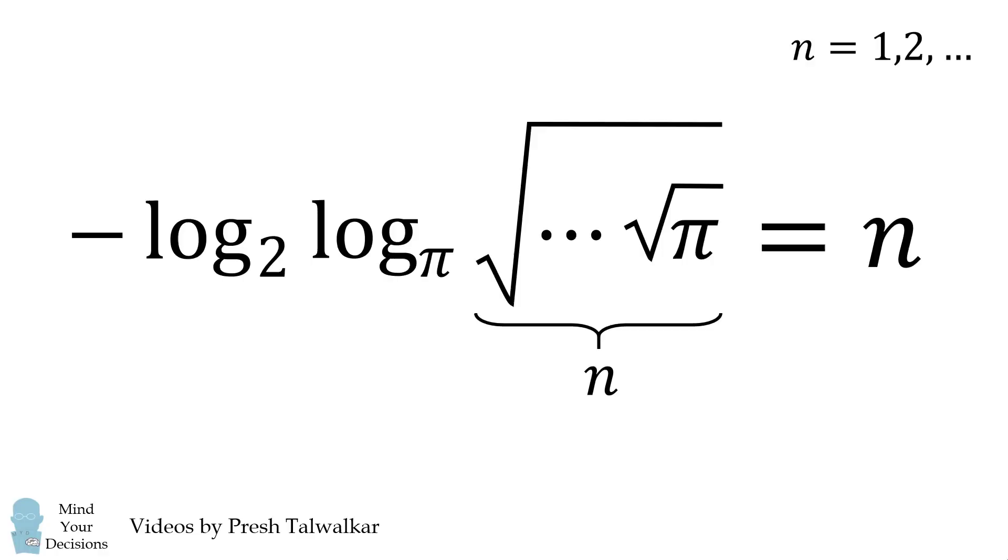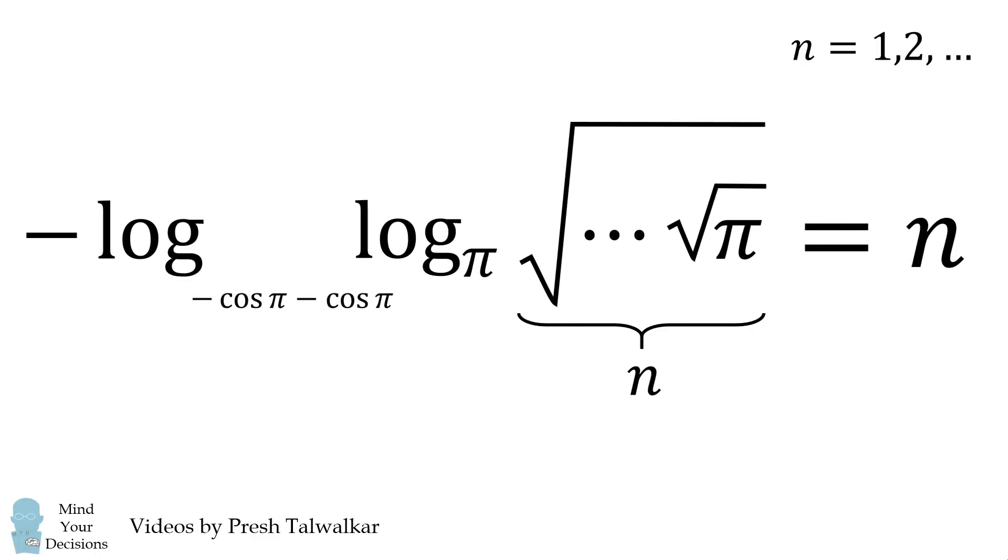Both of these will cancel out. We can then rewrite 2 as equaling negative cosine of pi minus cosine of pi. We thus have a valid expression that uses pi a total of 4 times.